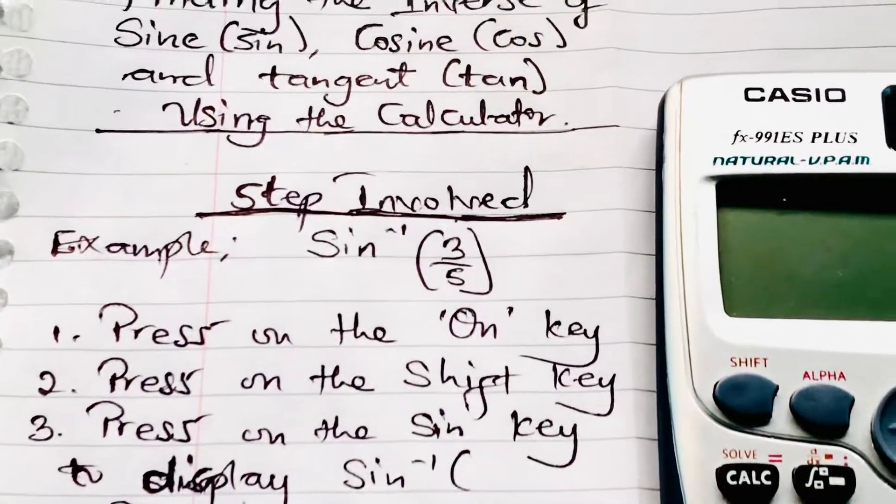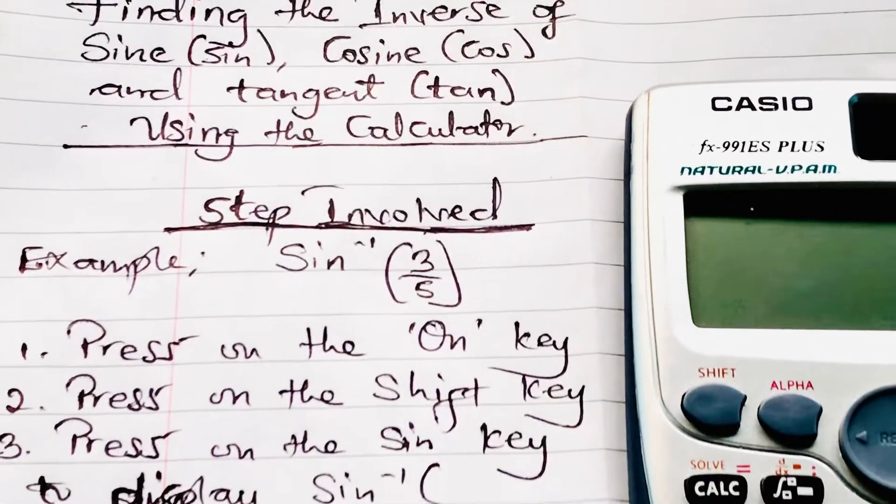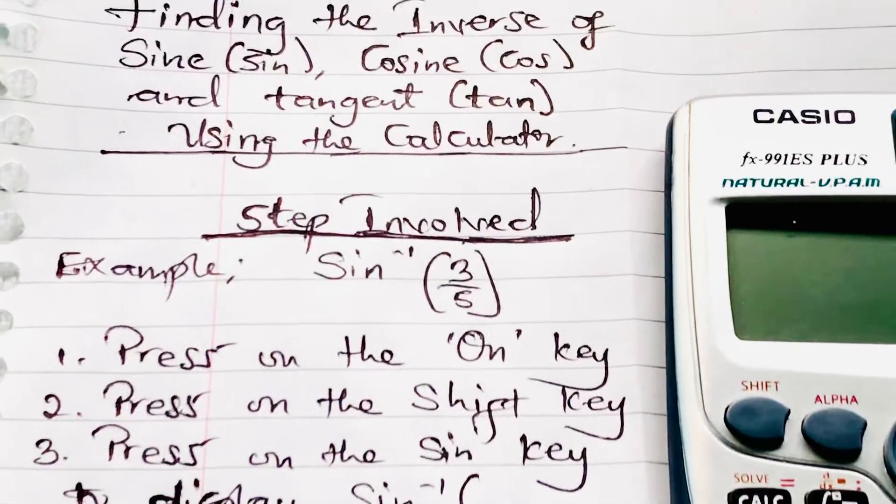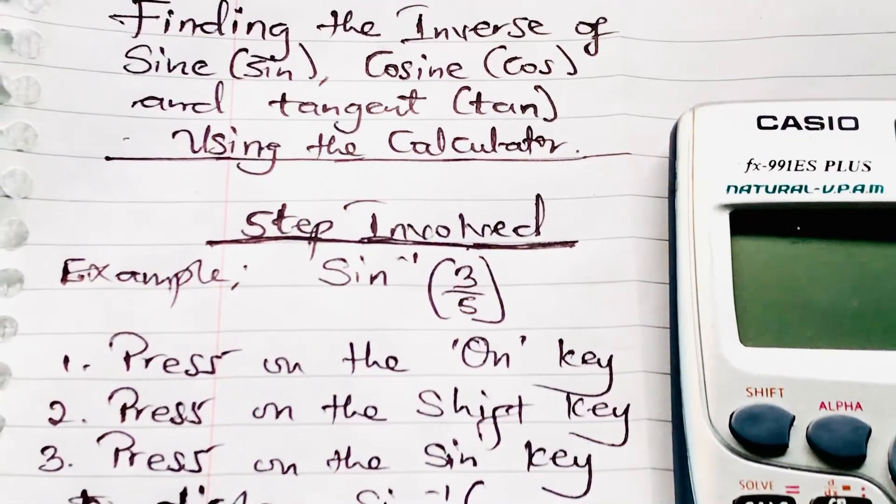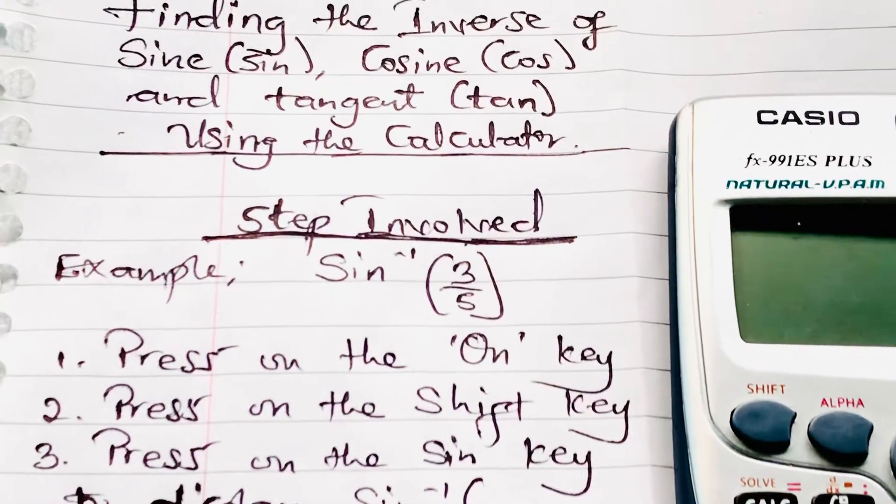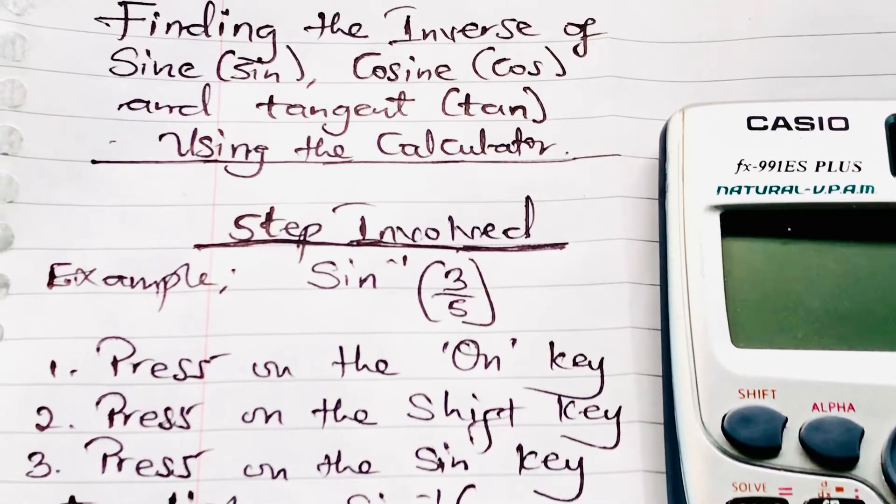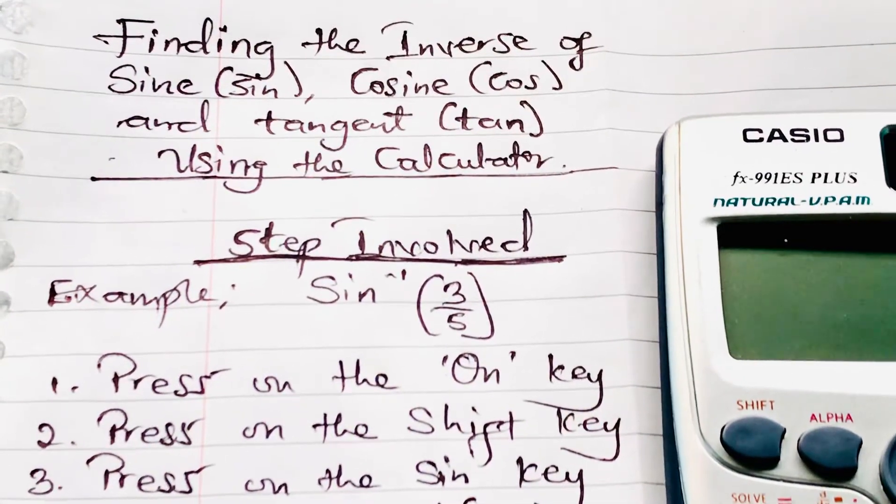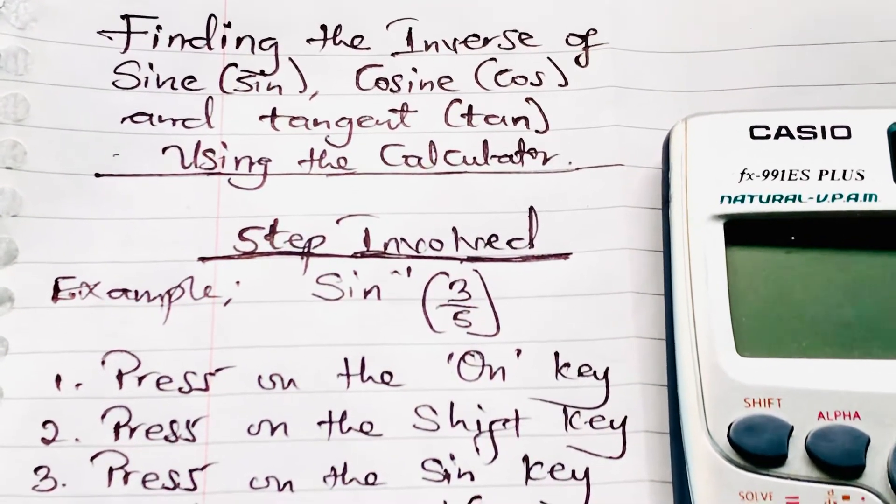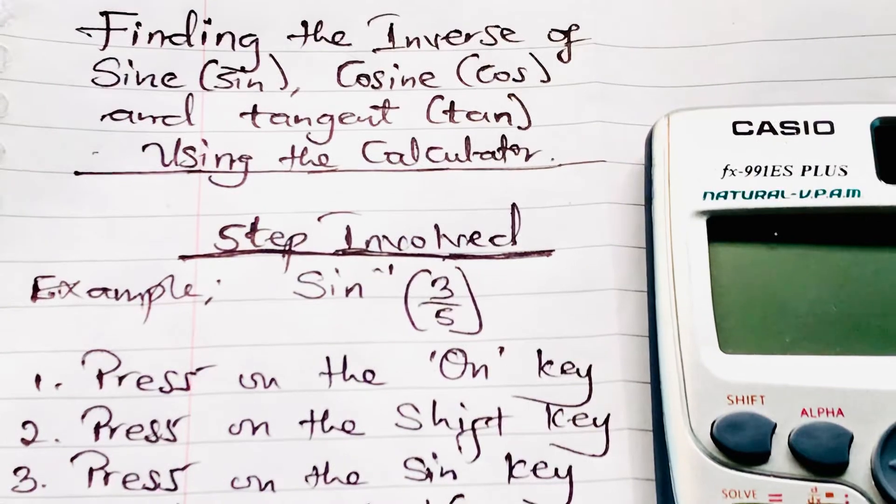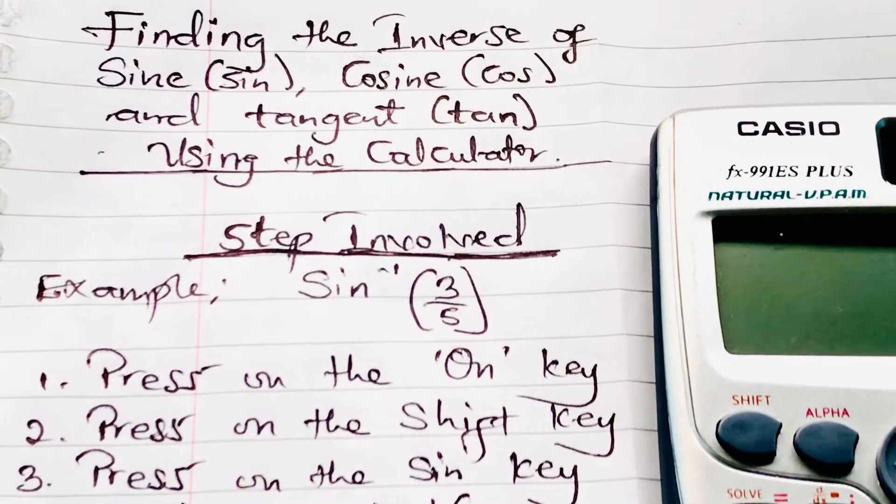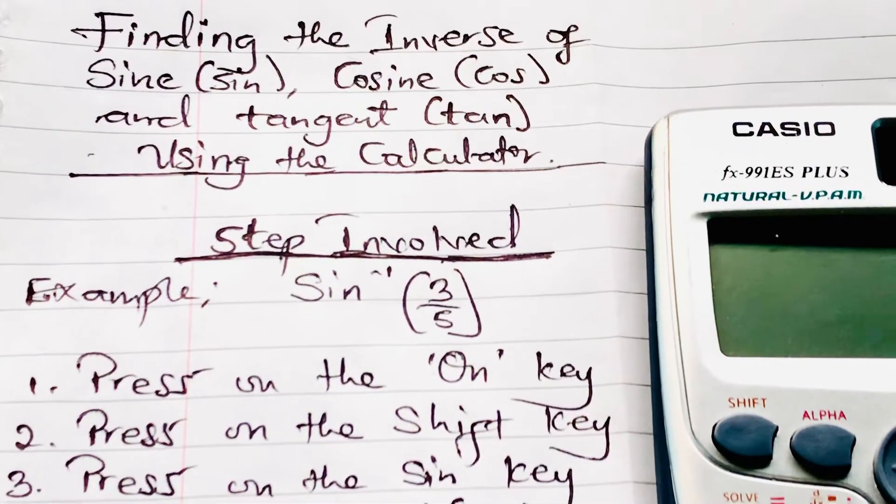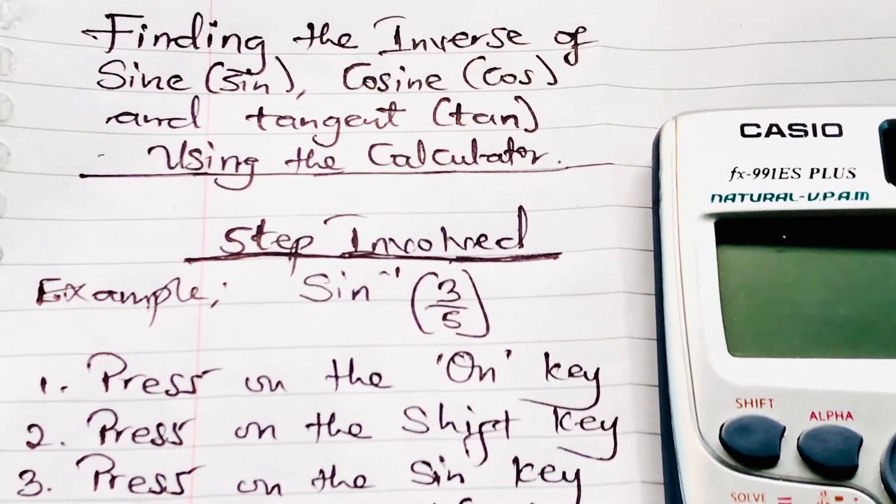So we will pick some examples and go through the steps together. The first example we are going to pick is finding the sine inverse of 3 over 5. As you know from our previous lesson, sine inverse is written as sine exponent negative 1.